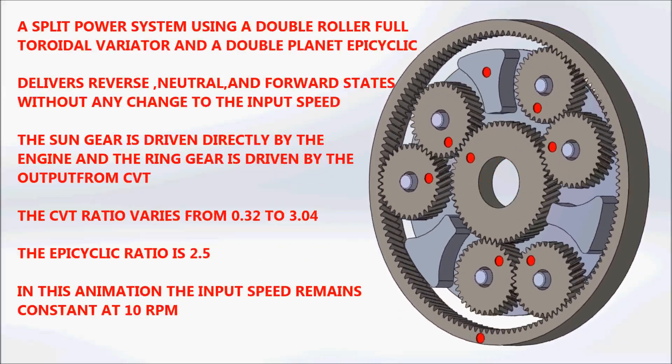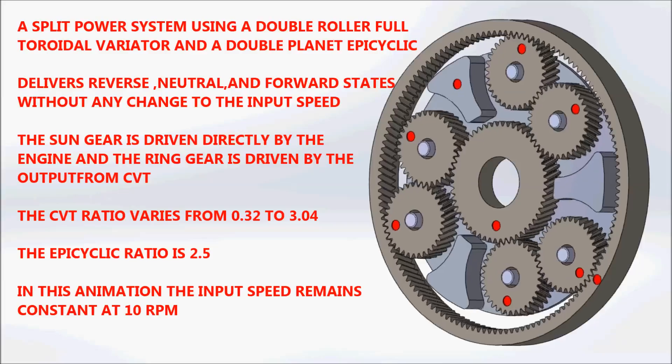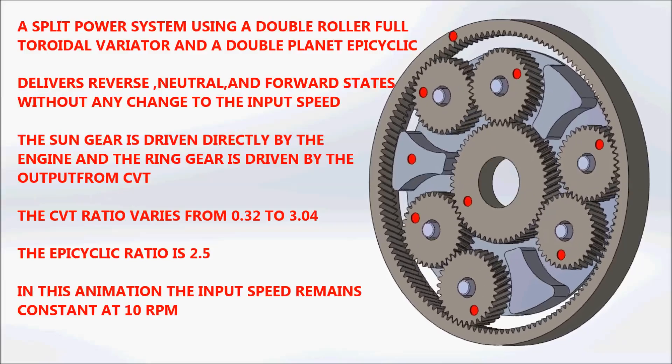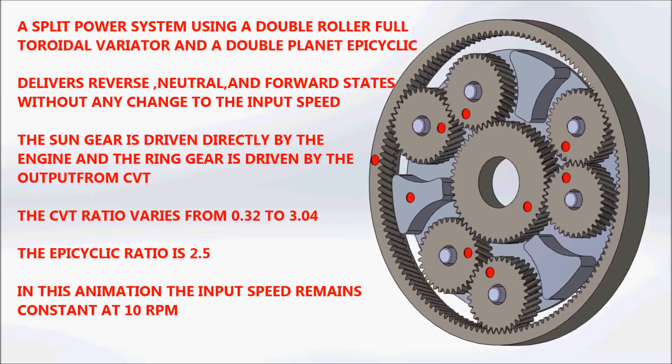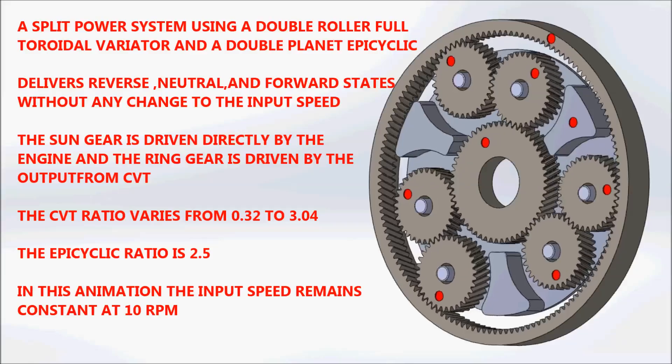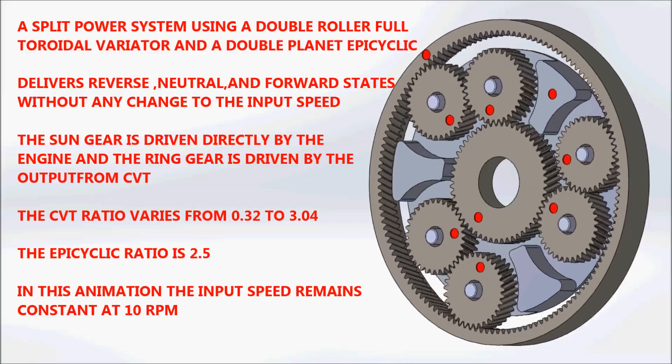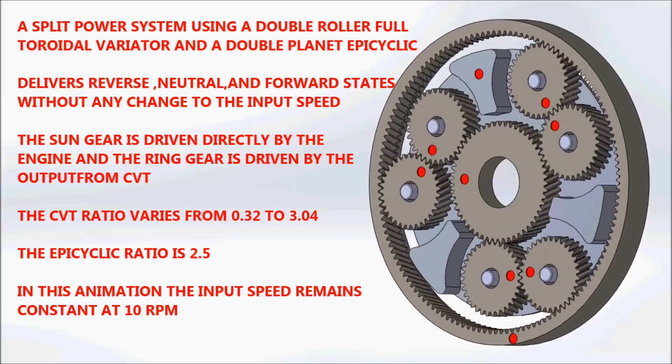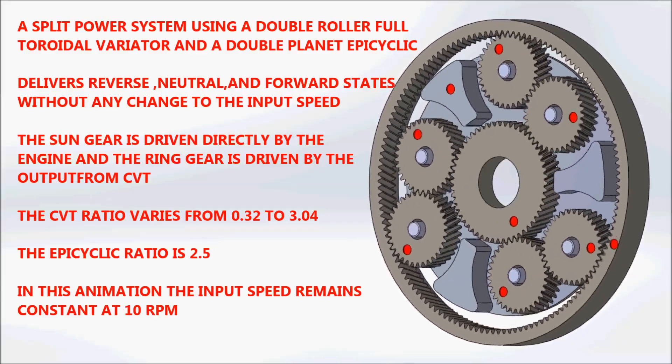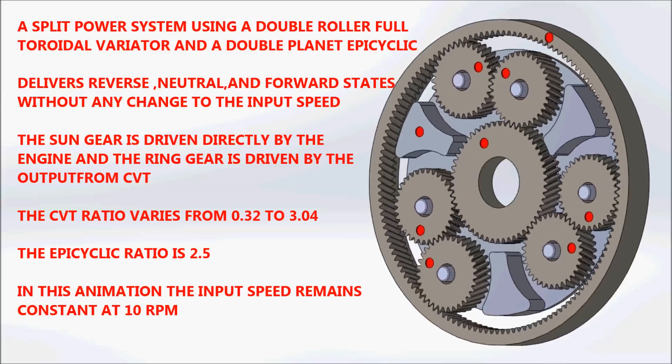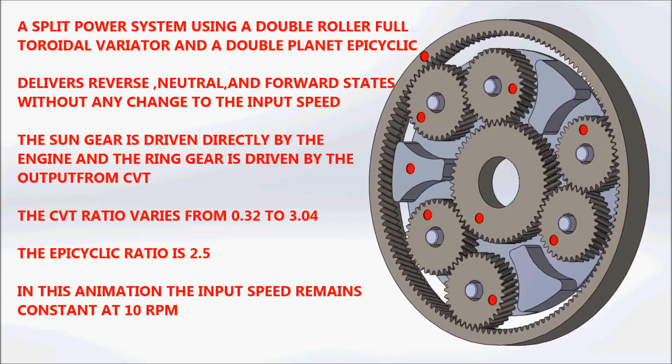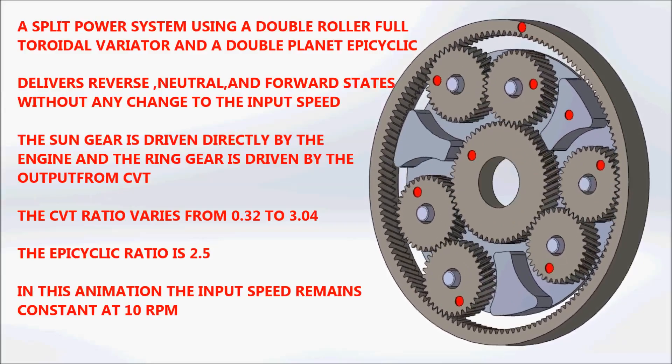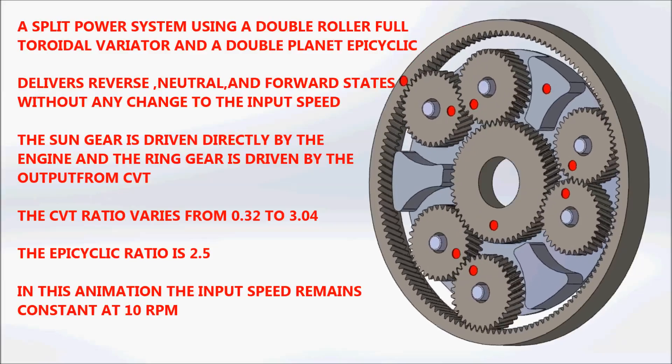A split power system using a double roller full toroidal variator and a double planet epicyclic delivers reverse, neutral, and forward states without any change to the input speed. The sun gear is driven directly by the engine, and the ring gear is driven by the output from the CVT. The CVT ratio varies from 0.32 to 3.04. The epicyclic ratio is 2.5.